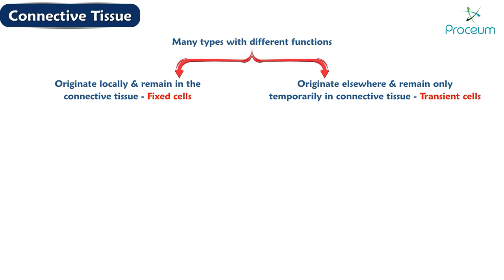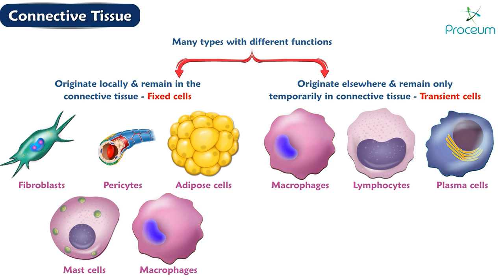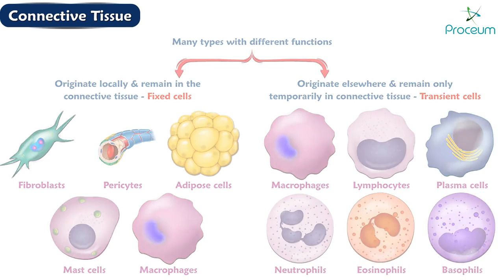Fixed connective tissue cells include fibroblasts, pericytes, adipose cells, mast cells, and fixed macrophages. Transient connective tissue cells include certain macrophages, lymphocytes, plasma cells, neutrophils, eosinophils, and basophils.